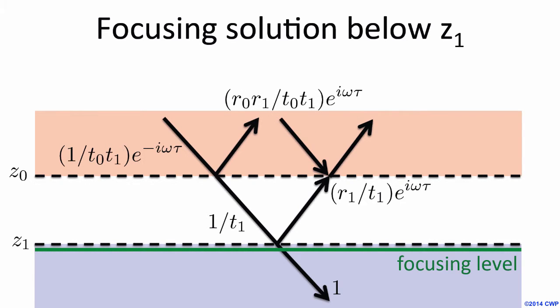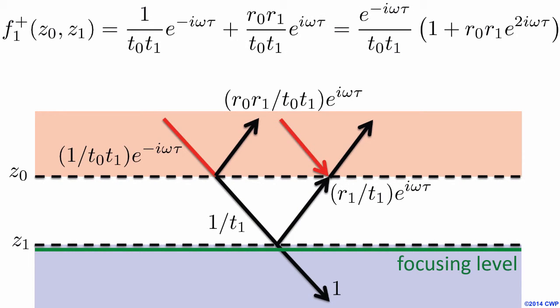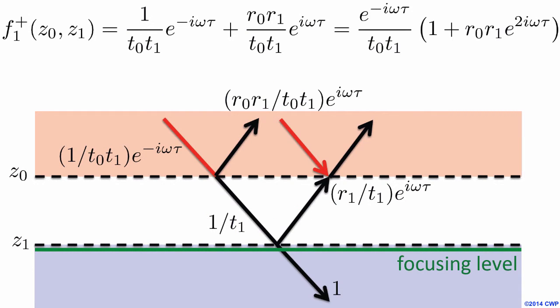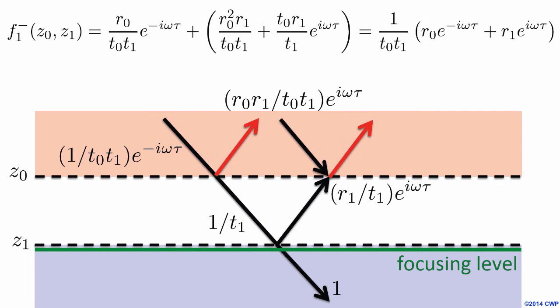Now I know all the variables. This is my focusing solution. In this case there are two down-going waves coming in from the top, designed such that I have only one down-going wave below my focusing level. The focusing solution has two down-going waves and two up-going waves — that's different from the Green's function, because for the Green's function of this two-layer model we had infinitely many up-going waves due to all the reverberations.